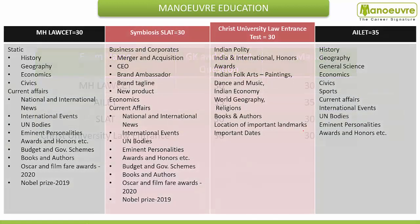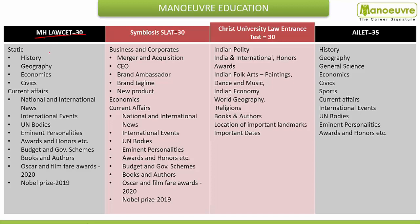Now let's see what will be the nature of the paper. For MH Law CET, the nature of the paper will be miscellaneous. It means static GK and current affairs will have equal value. You have to study history, geography, economy, and civics — questions can be expected from these sub-sections. As well as current affairs part is also covered.